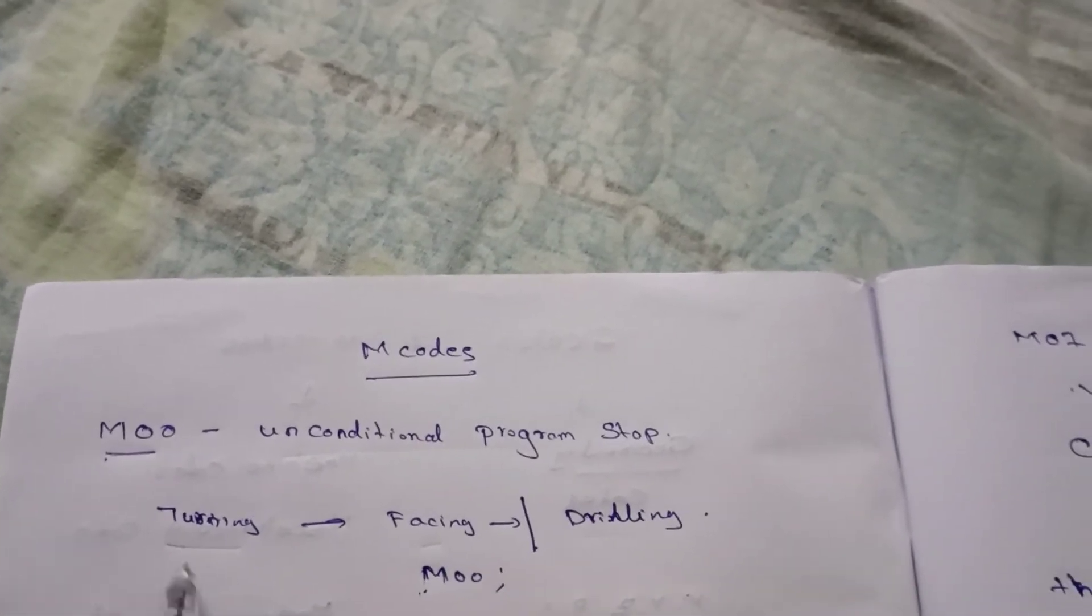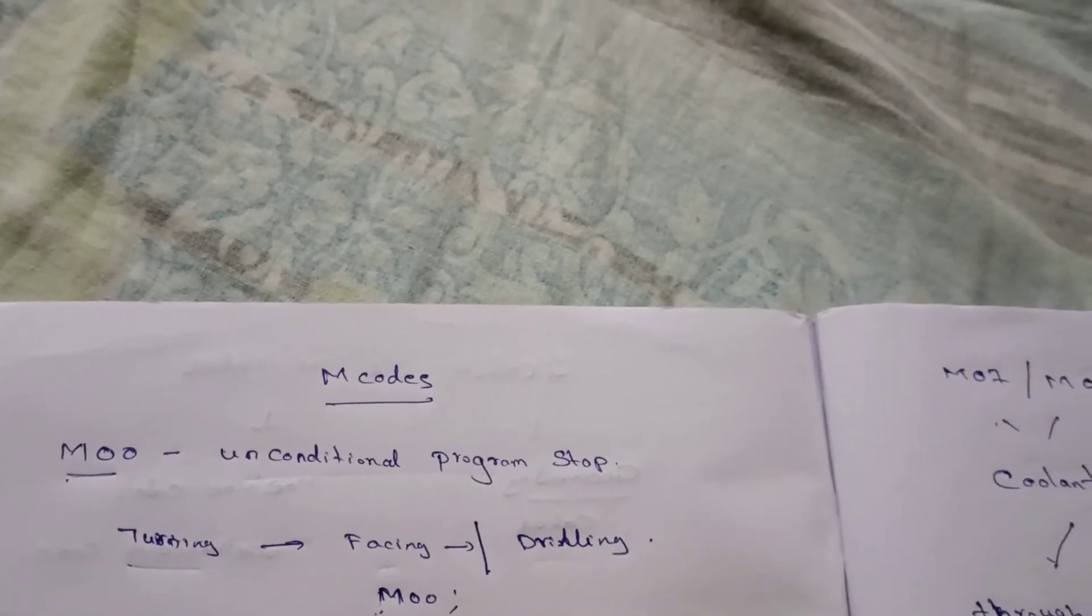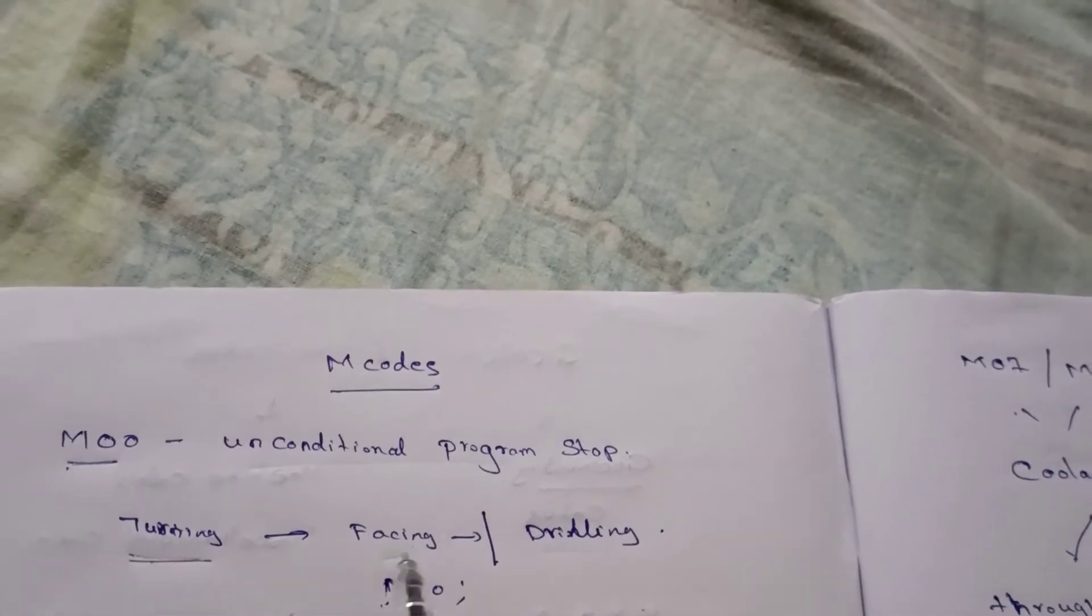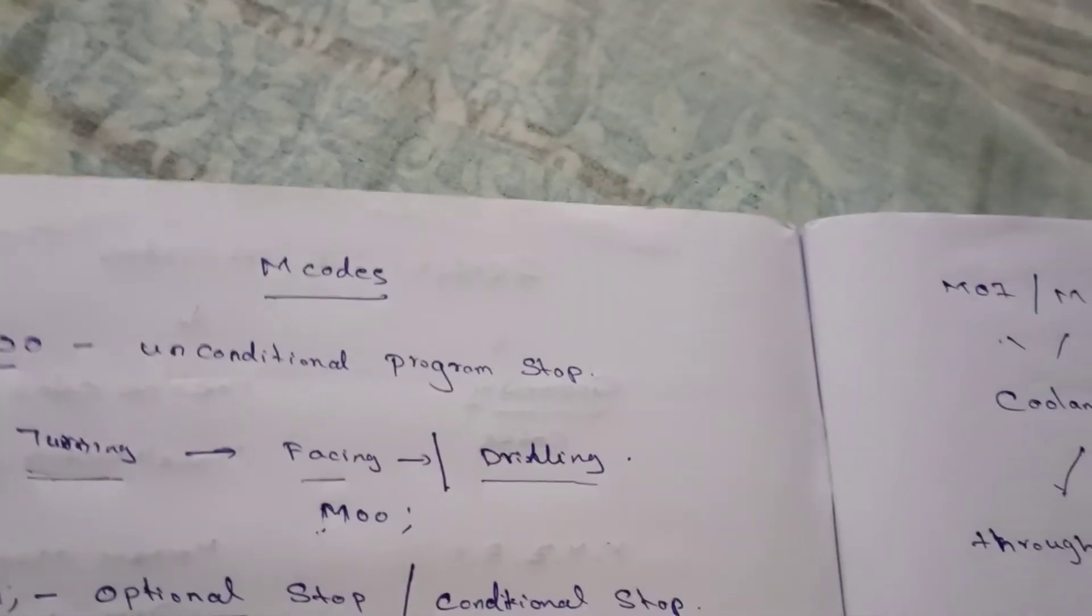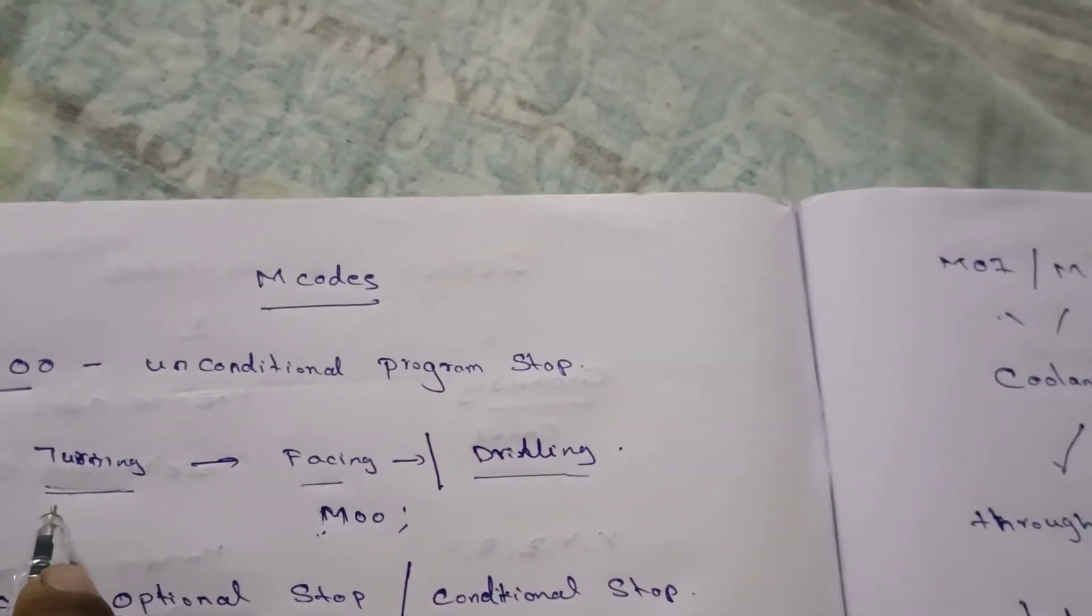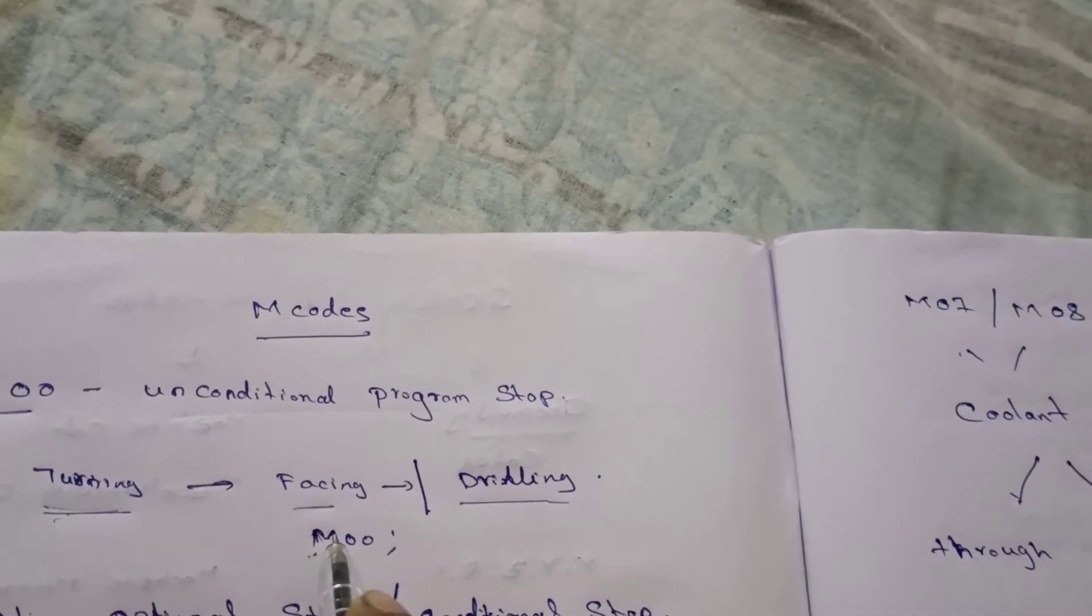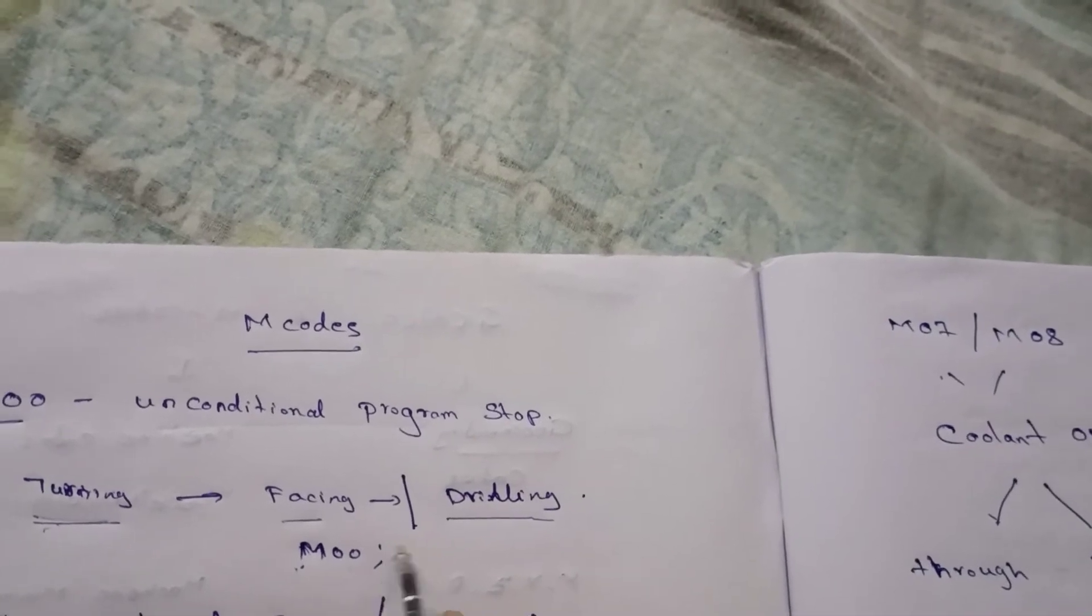It means in an operation, turning, facing and drilling are three operations carried out on the part. After turning and facing, when you keep the M00, it will stop there before drilling.